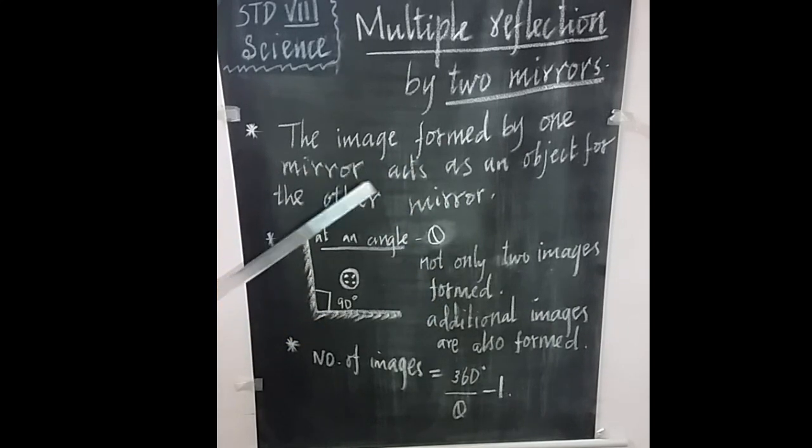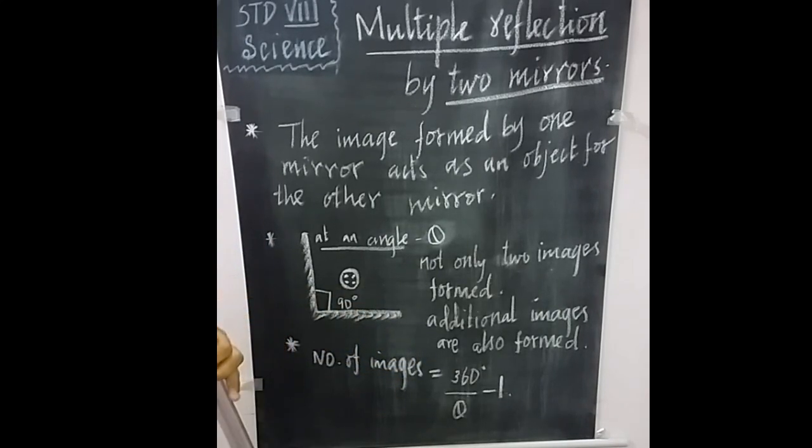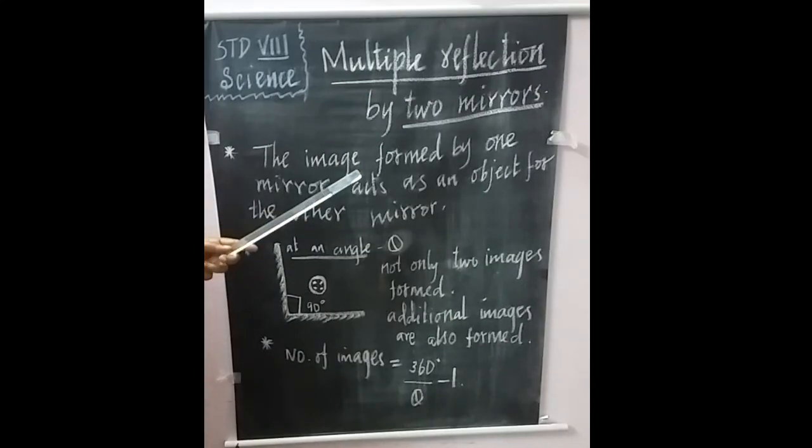For example, in saloons, beauty parlors, and even trial rooms of textile shops. That is multiple reflection. How does this number of images form?